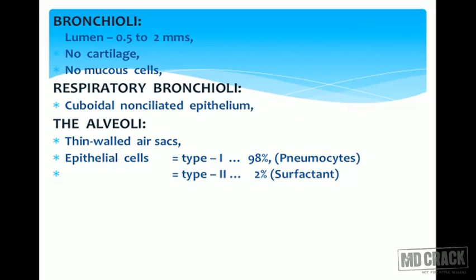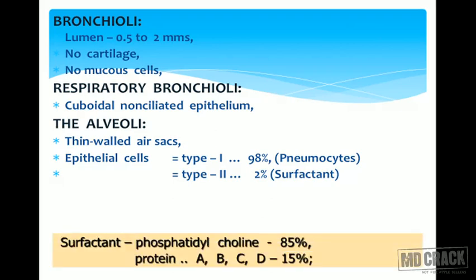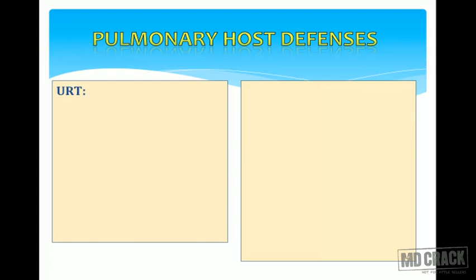Type 1 pneumocytes are the predominant cells — 98% of the cells are type 1 pneumocytes. Type 2 pneumocytes are the ones which secrete surfactant, which reduces the surface tension of the alveoli. Surfactant is made up of phosphatidylcholine and other protein molecules. So we have a lot of host defense mechanisms which prevent easier infection of the lungs.